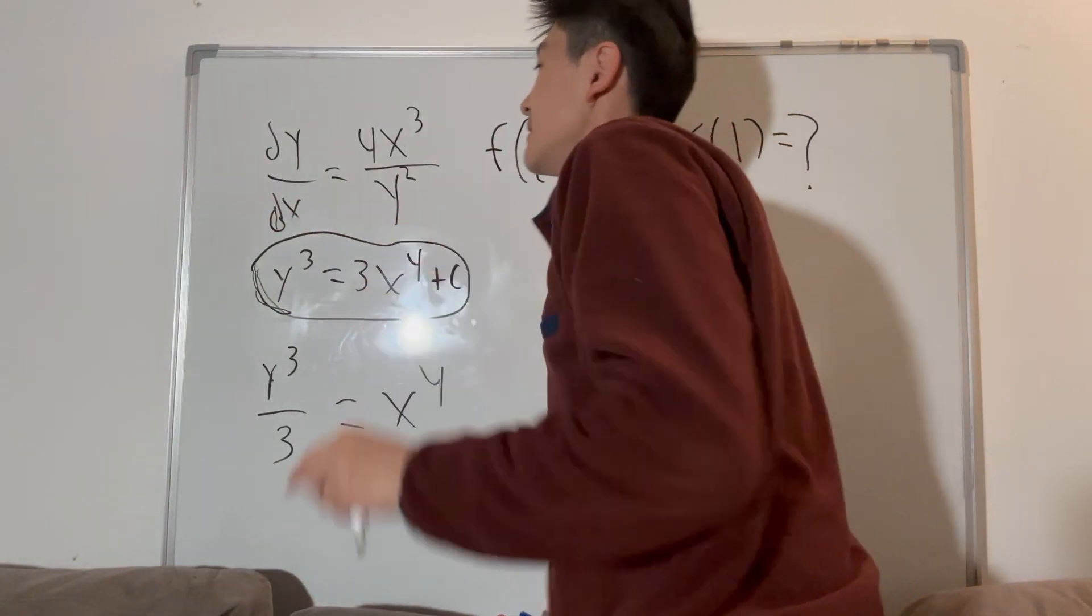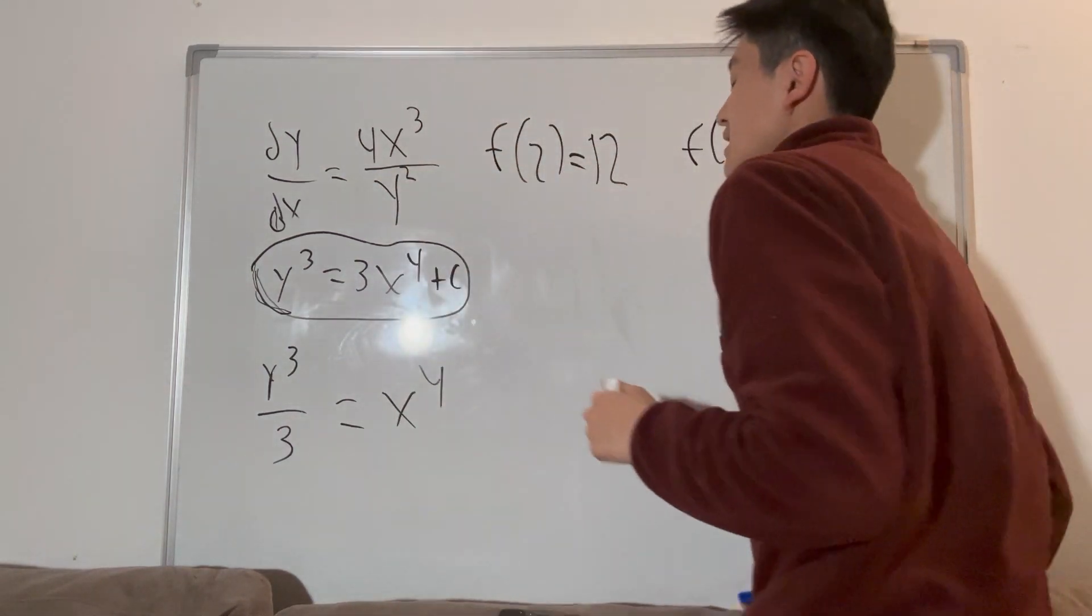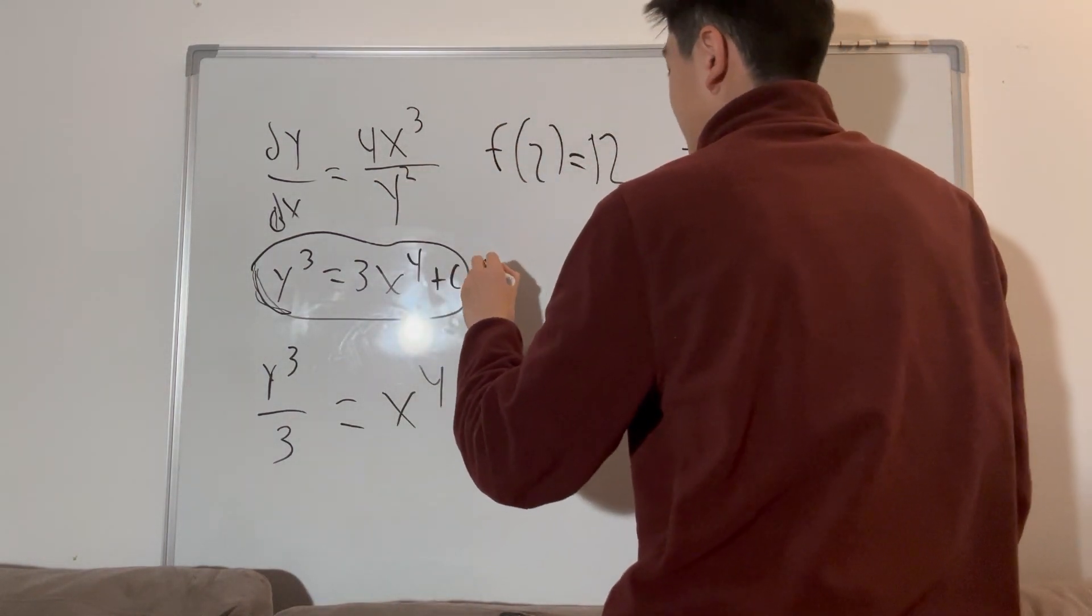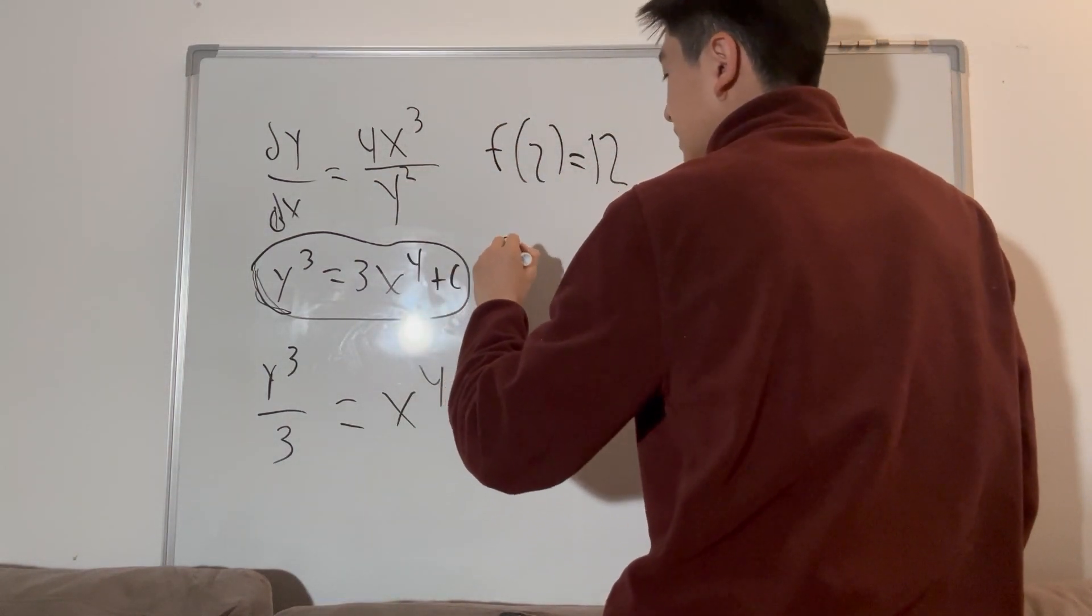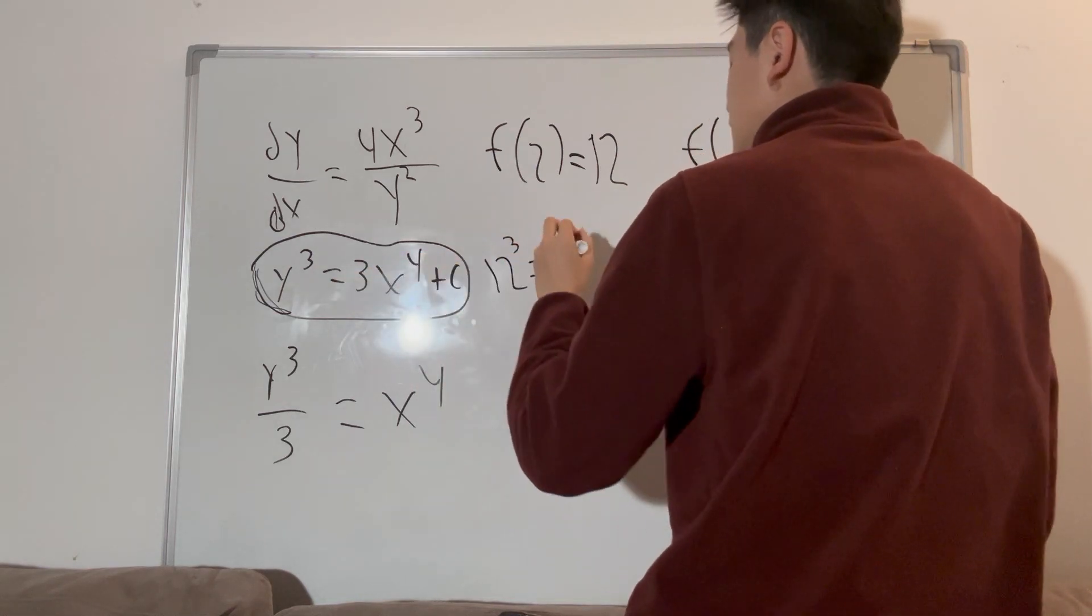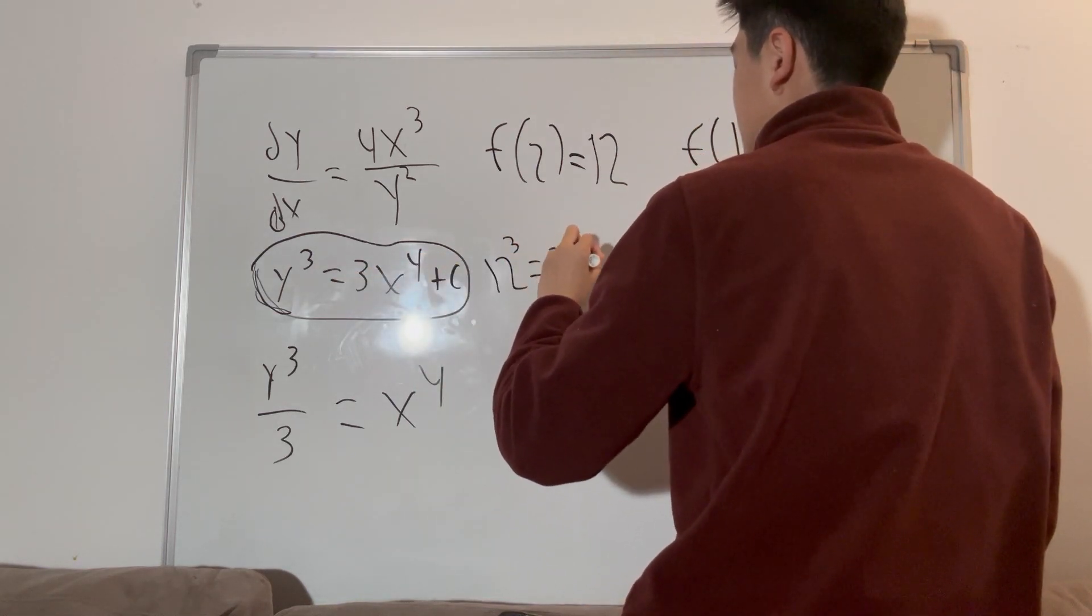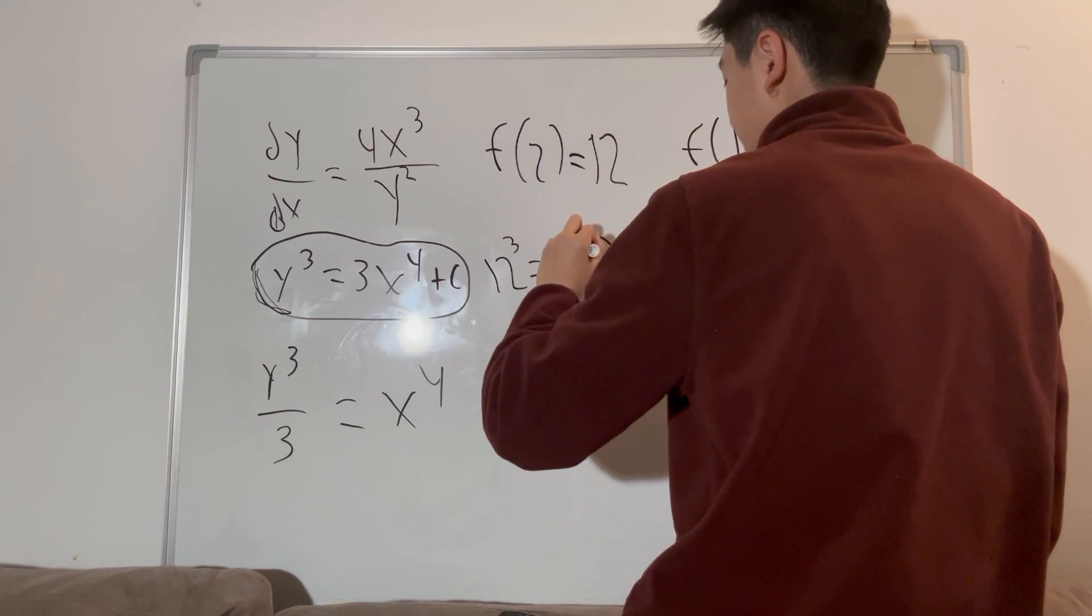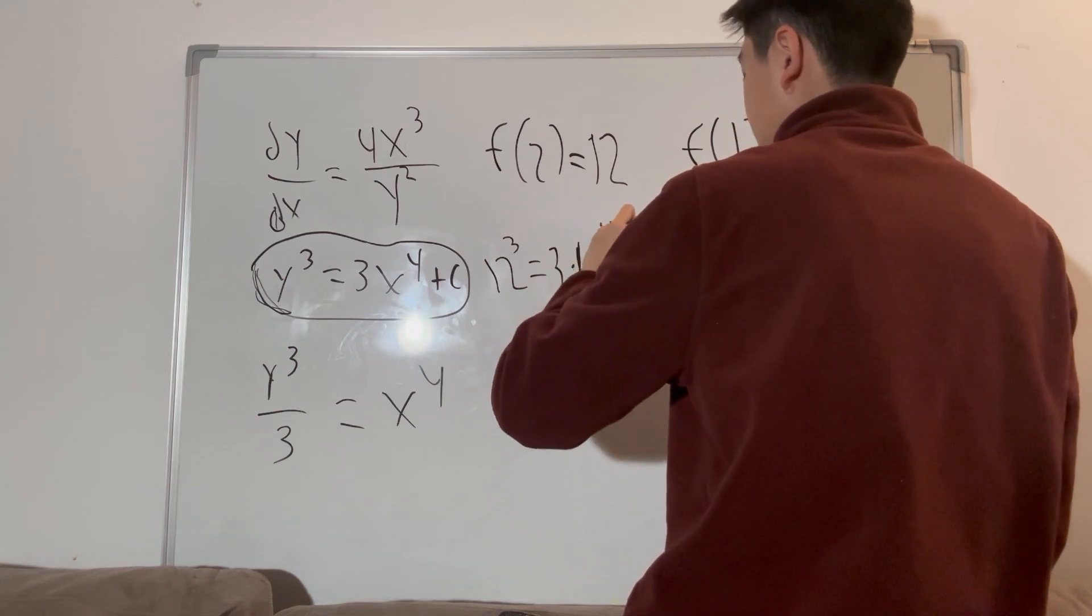So since this is a pretty big numerical value, I don't know twelve cubed off the top of my head. So we're going to plug into the calculator. We're going to have twelve cubed is equal to three times two to the fourth plus c.